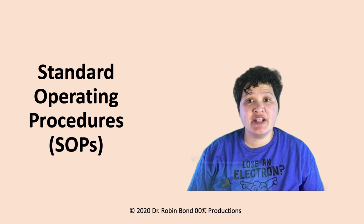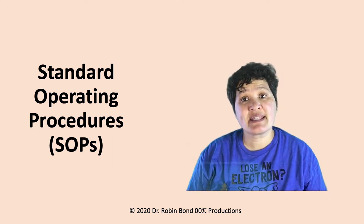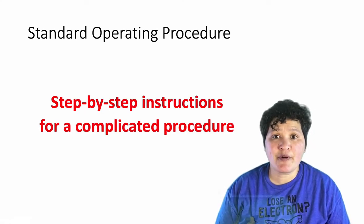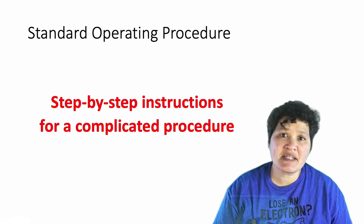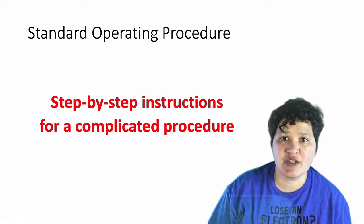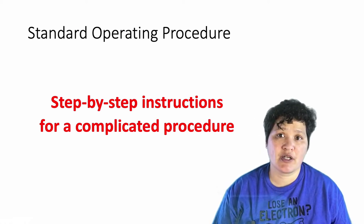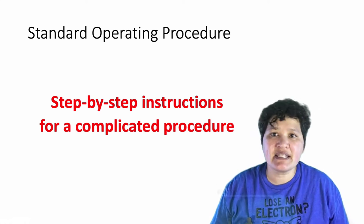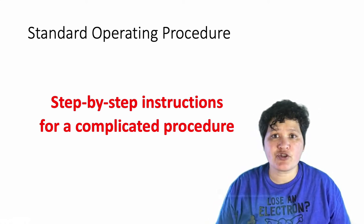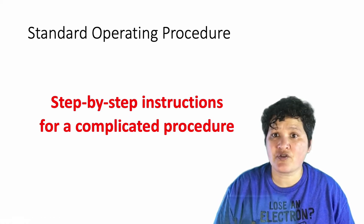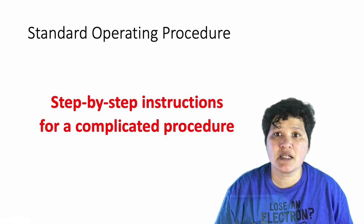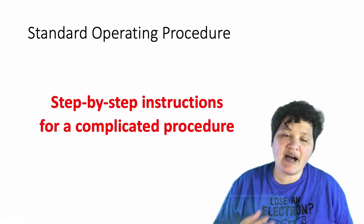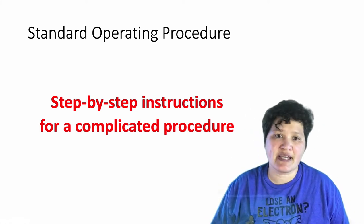Today I'm going to give you an introduction to standard operating procedures. A standard operating procedure is basically a step-by-step set of instructions for a complicated procedure. You can have this for anything — it doesn't have to be scientific. I've seen standard operating procedures in restaurants, banks, and a wide variety of situations. But what we're going to talk about specifically is how to write a good scientific standard operating procedure.